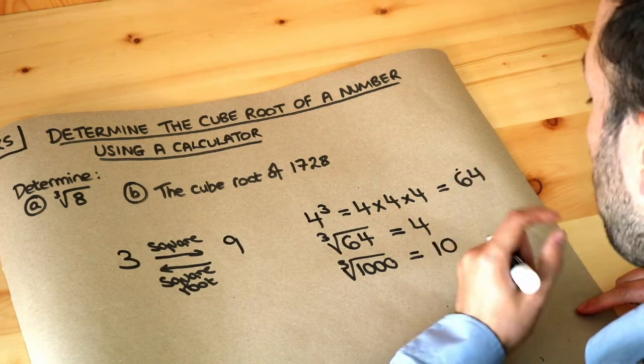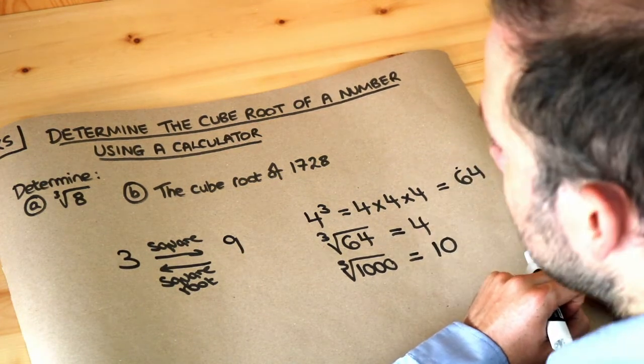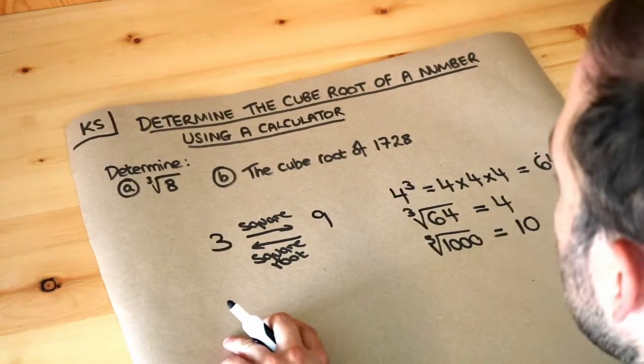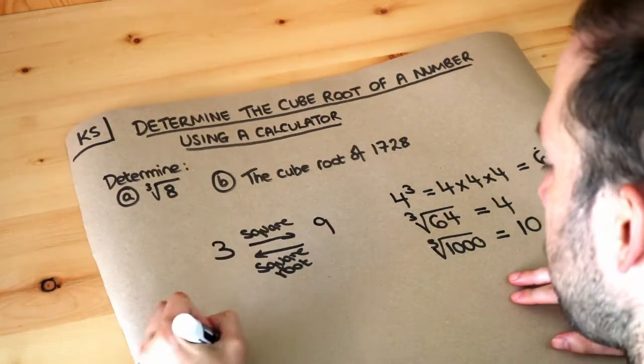So usually, but not always, cube rooting a number makes it smaller. Now we can do this on our calculator. The first one, we don't really need a calculator for: the cube root of 8.